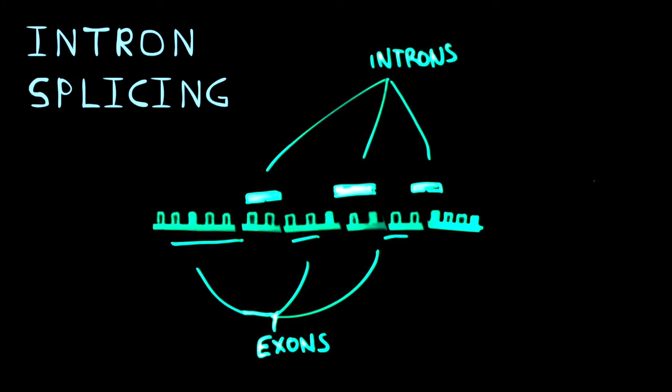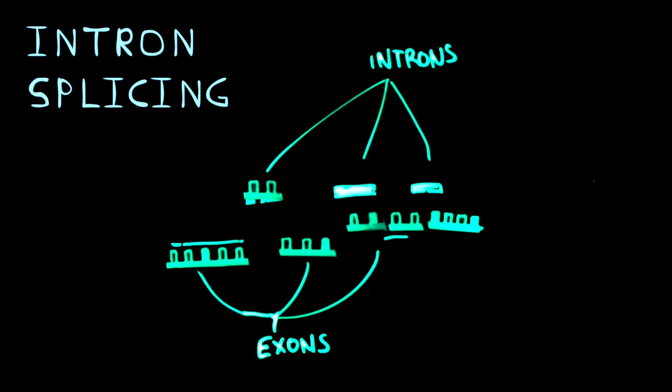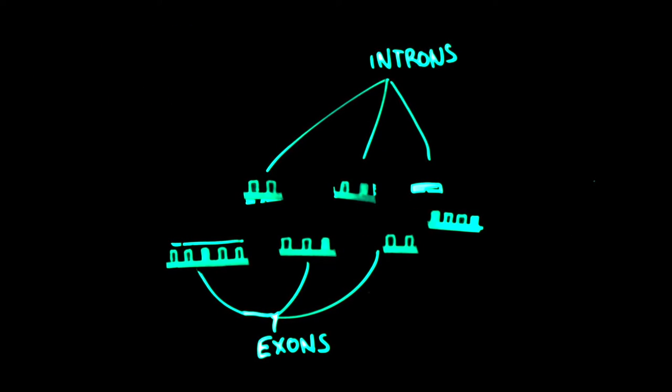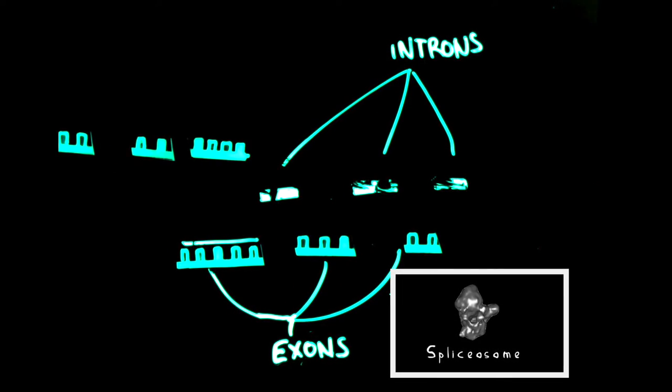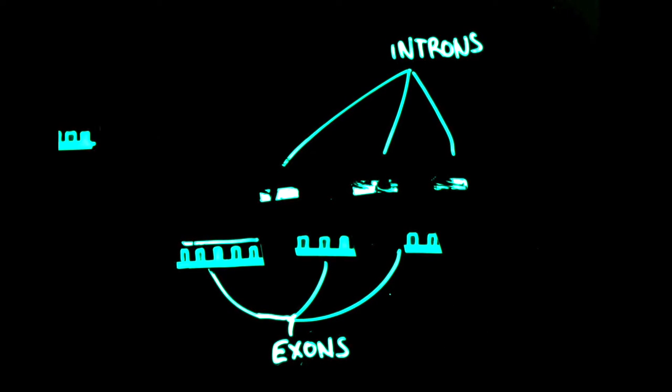This is done through a process known as intron splicing. During intron splicing, a complex made of proteins and RNA, known as a spliceosome, removes all the introns from the mRNA and connects the coding exons.